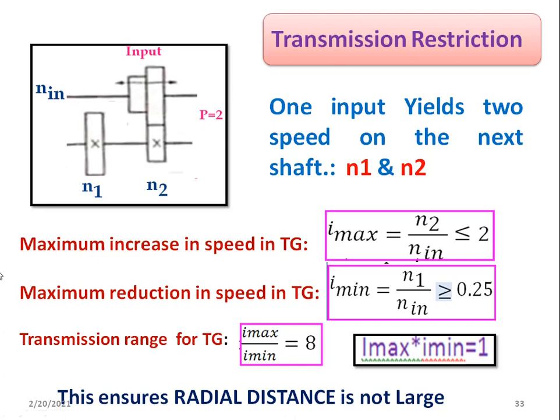As covered in previous videos, φ is the geometric progression ratio — the ratio of two successive spindle speeds. Here, the transmission range of a transmission group equals I_max divided by I_min, which equals 8, or equivalently φ⁸. Additionally, I_max multiplied by I_min equals 1.